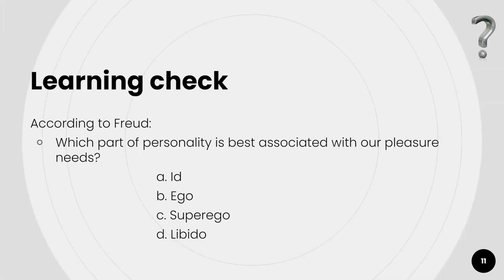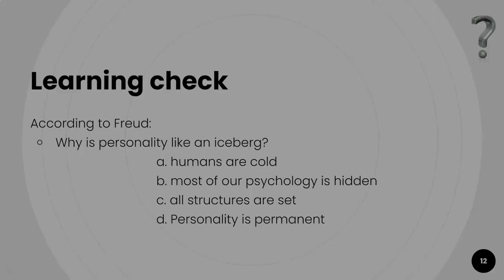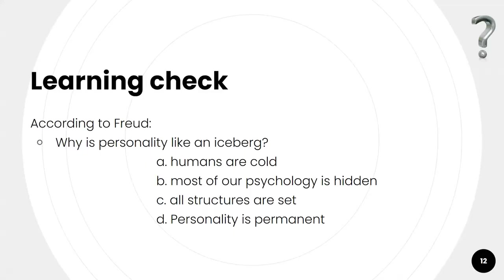Quick check: which part of personality is best associated with our pleasure needs? The id, which is all about pleasure and immediate gratification. According to Freud, why is personality like an iceberg? Because most of our psychology is hidden — most of the iceberg's structure is underneath the water, inaccessible to us.